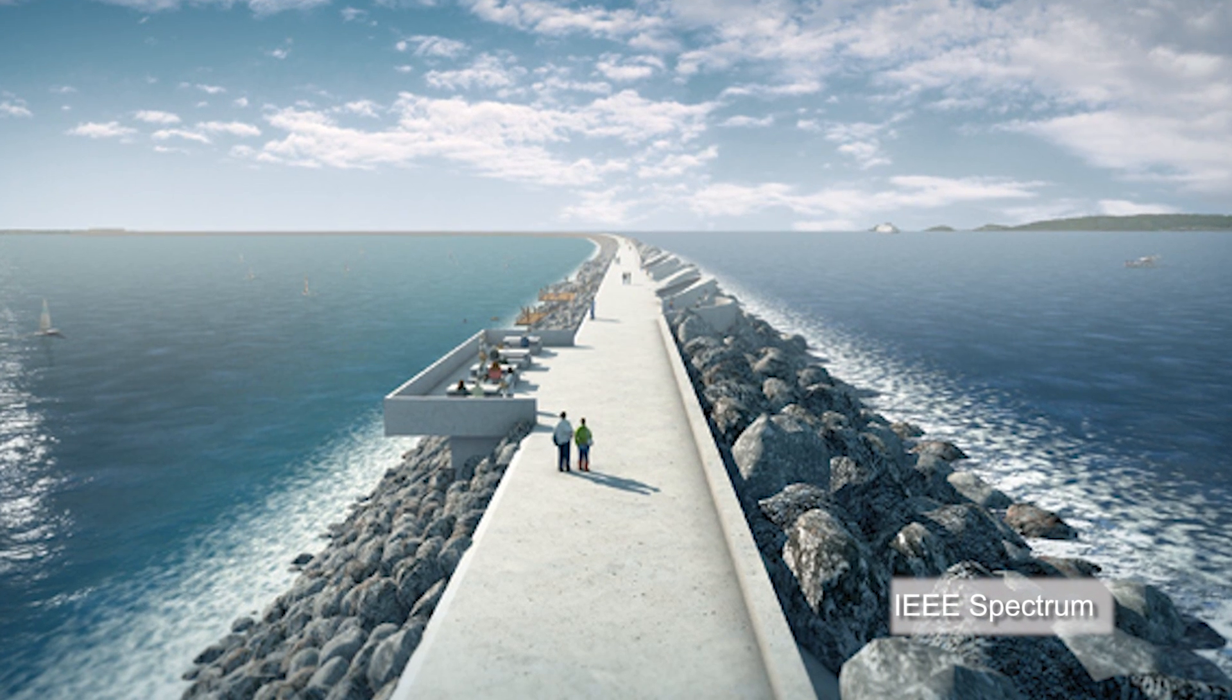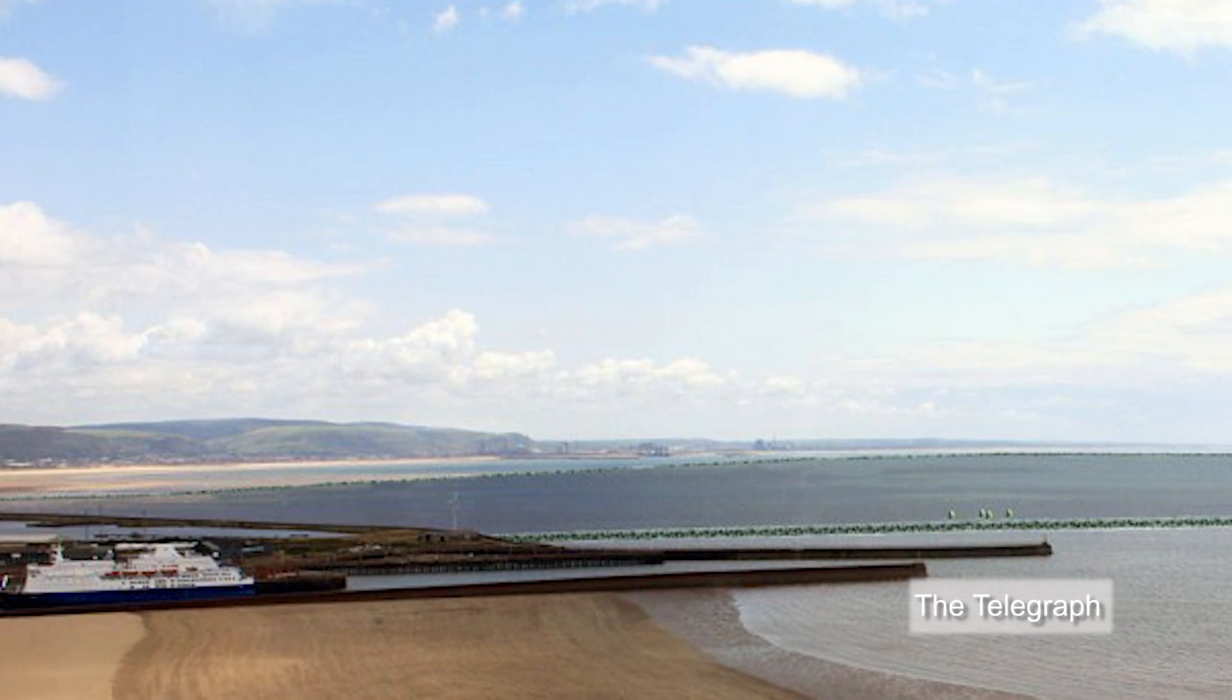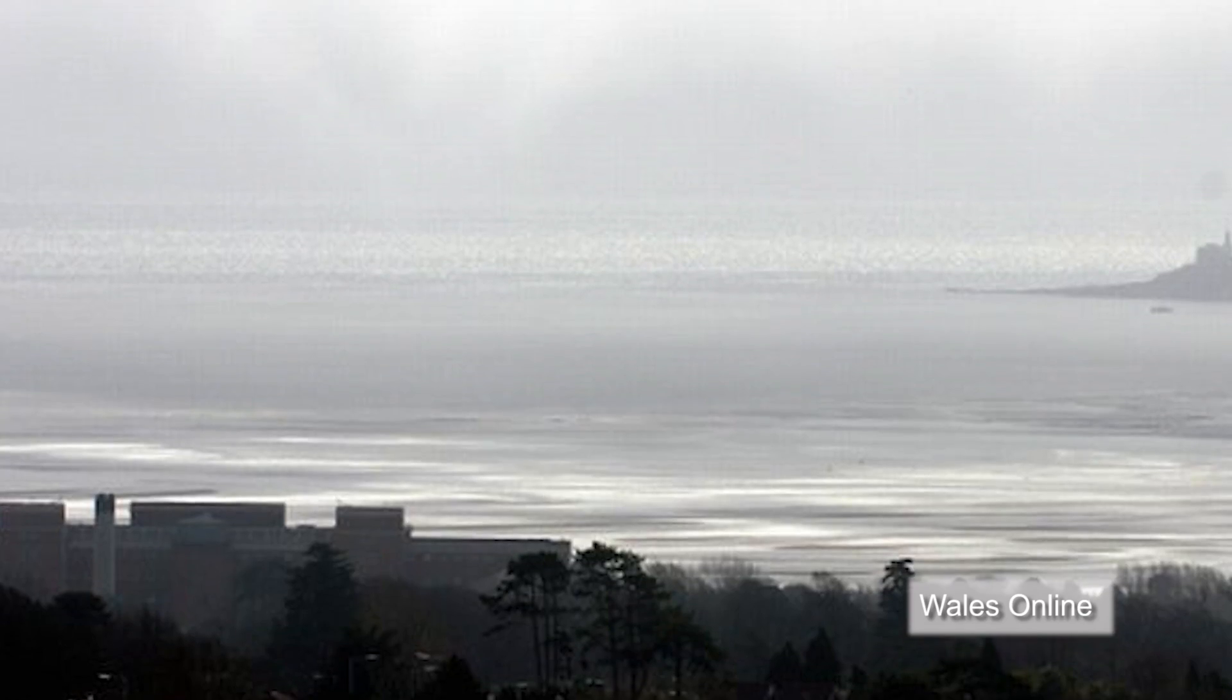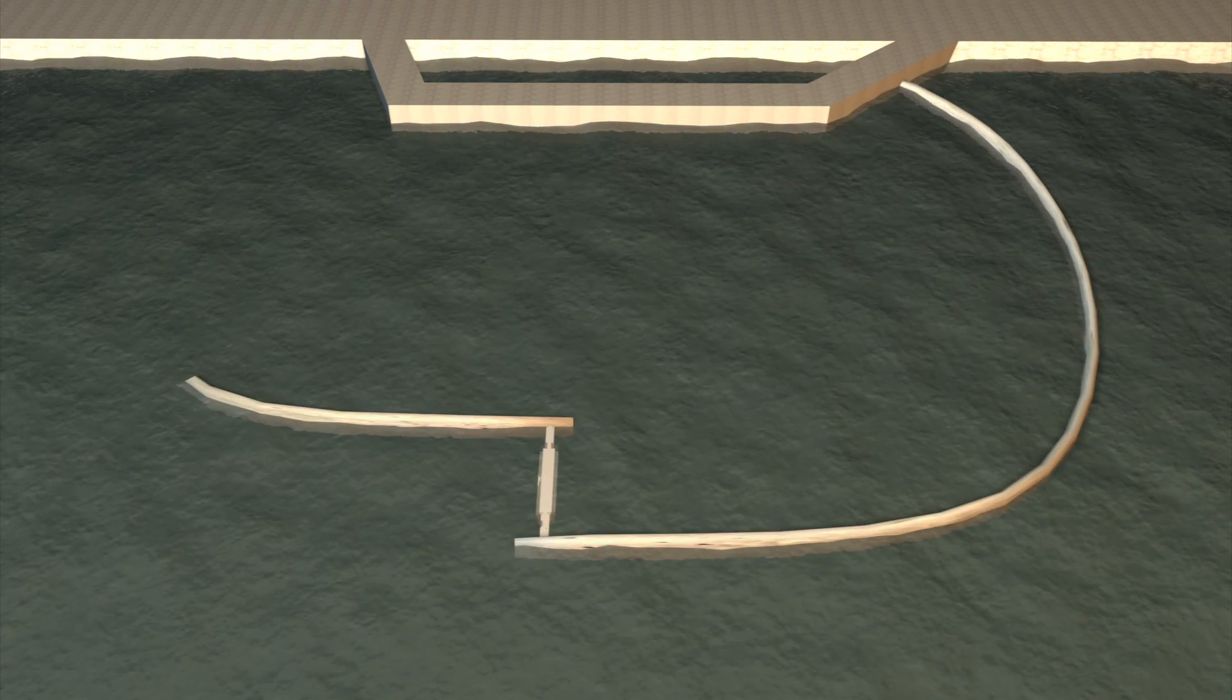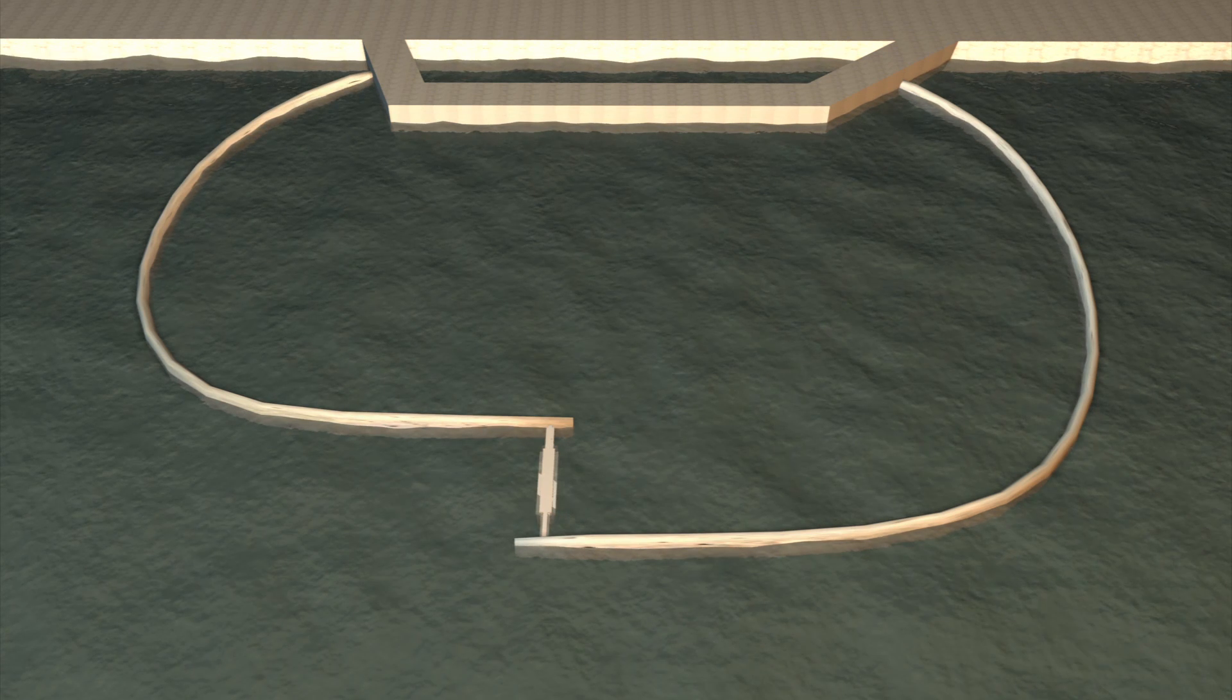A company is proposing to build a US$1 billion tidal power plant in Swansea Bay in Wales. The project will create a 750-metre-long lagoon-shaped seawall in Swansea Bay.